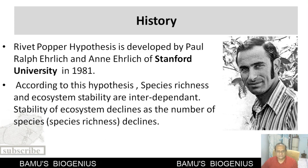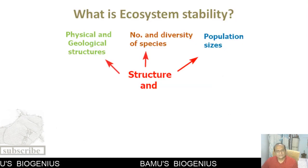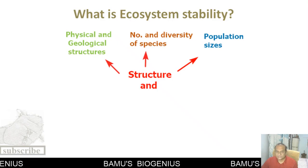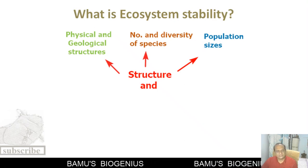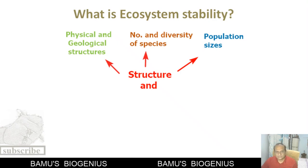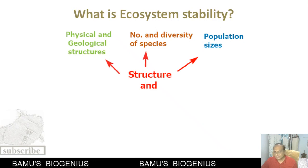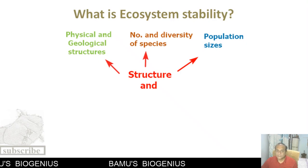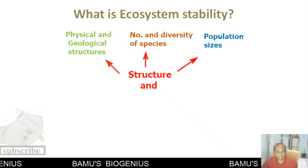What do we mean by stability of ecosystem? When a particular ecosystem is able to maintain its structure and function, it is called a stable ecosystem. The structure of an ecosystem includes physical and geological structures present in that ecosystem, the number and diversity of species, and the population sizes present in that ecosystem.